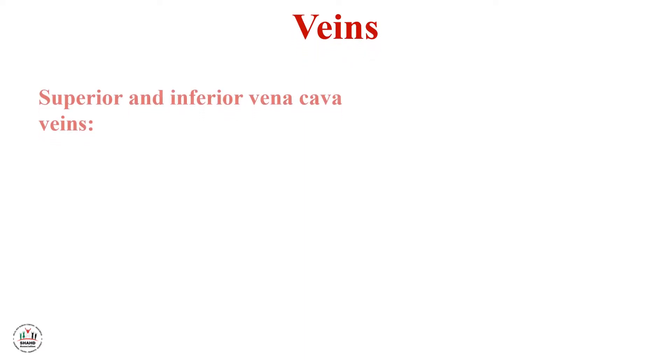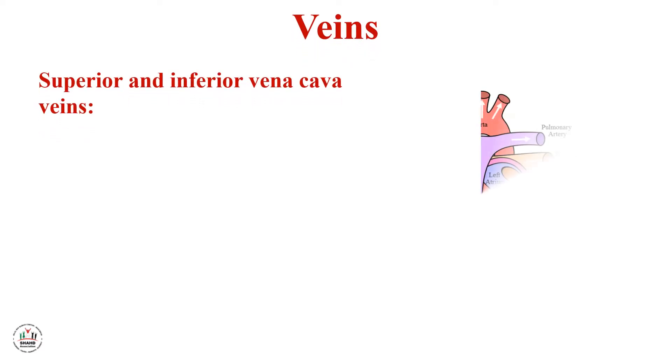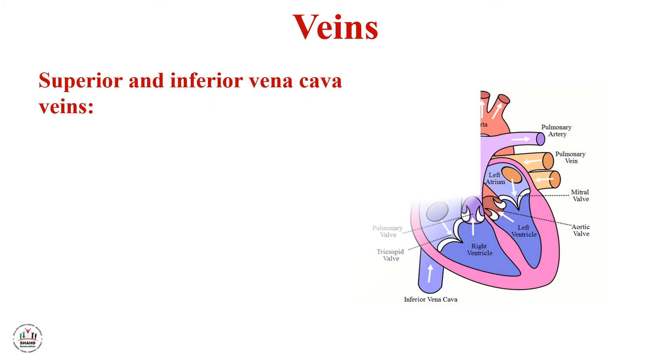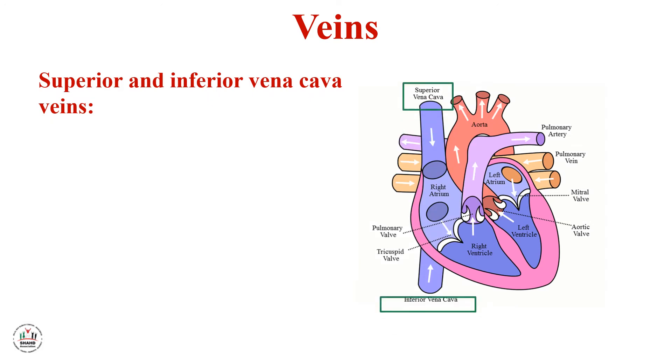Now we will talk about veins. The superior and inferior vena cava veins carry blood that is rich in carbon dioxide from the organs to the right auricle of the heart.